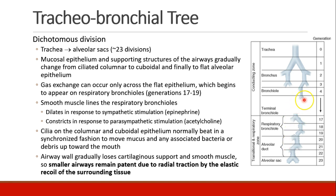The columnar and cuboidal epithelium have cilia, which normally beat in a synchronized fashion to move mucus and other bacteria and debris upwards towards the mouth. As we move down these generations, the airway walls gradually lose their cartilaginous support and smooth muscle, so that the only thing keeping them open is the radial traction by the elastic recoil of the surrounding tissue. This can lead to collapse of the smaller airways.